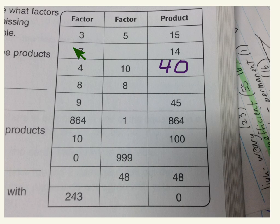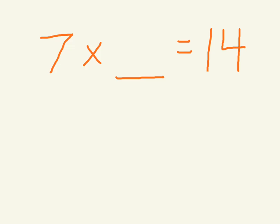When you have one factor and a product, you need to think a little more about what the other factor would be. Here you have 7 as one factor and 14 as the product. Think about it like this: 7 times what equals 14?